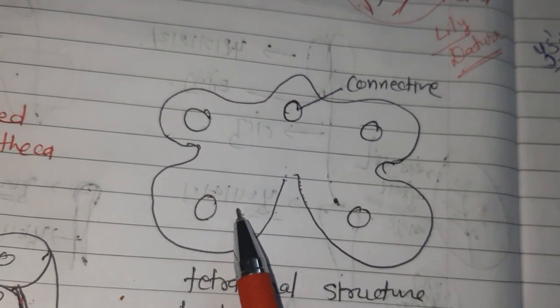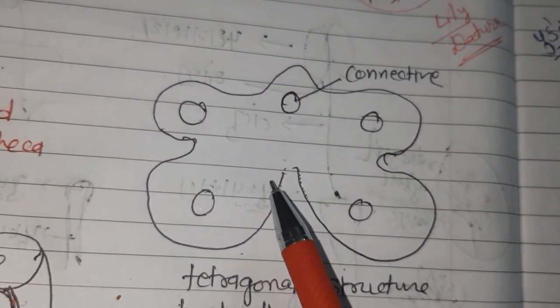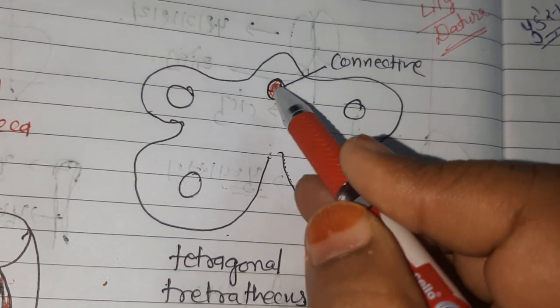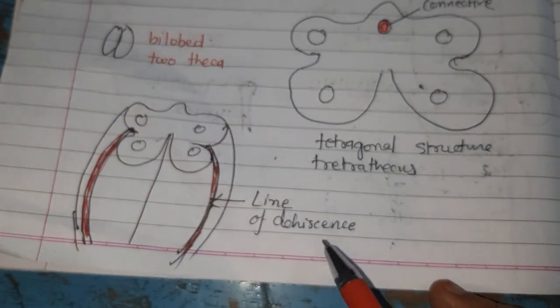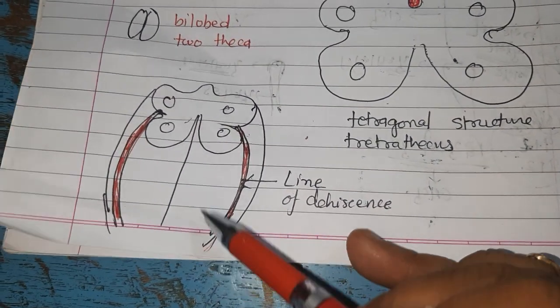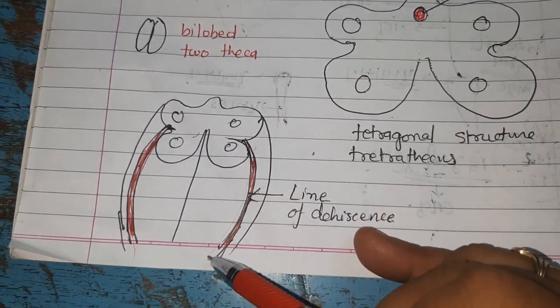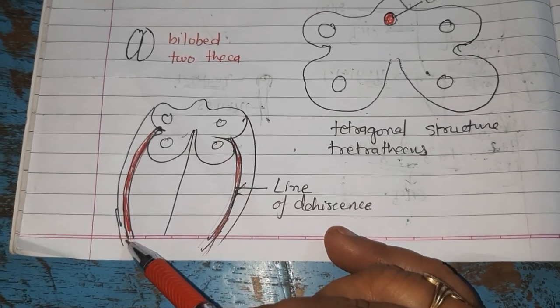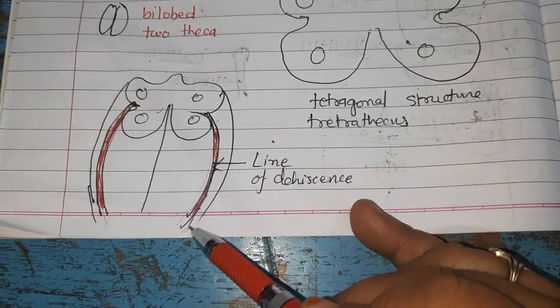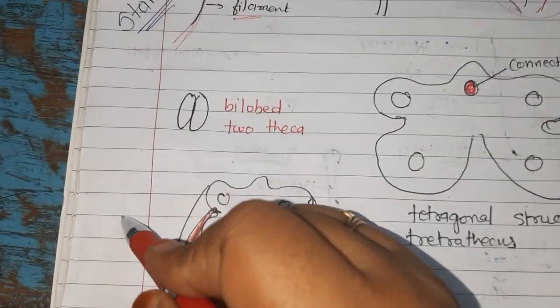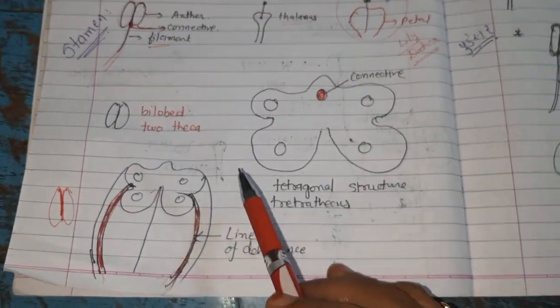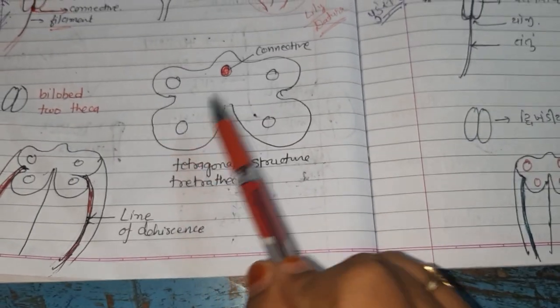Now T.S. of anther, that means transverse section of anther. You can see here there are four lobes or four theca, so it is tetra-thecous, and in center this is connective. The tetra-thecous structure, you can see here, this is line of dehiscence. That means this is a line where anther dehisces. Dehisce means to split open. So when it gets mature it dehisces. There is presence of dehiscence line along the length of anther. Remember that anther is bilobed but it is tetra-thecous.